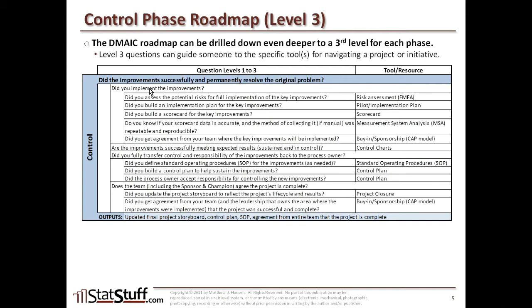The first question at the second layer is: did you implement the improvements? To answer that, you need to ask a few more questions. For example, did you assess the potential risks for full implementation of the key improvements? If not, this is where you refer to the FMEA to figure out what those potential risks are. Next, did you build an implementation plan for the key improvements? This is where we use the pilot plan framework — not just for test purposes, but for the full implementation of improvements, since we've proven through the pilot that they were successful.